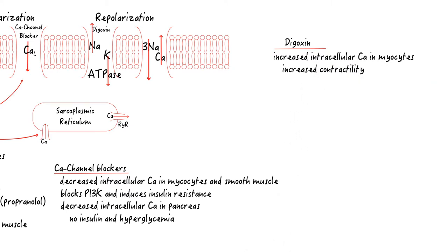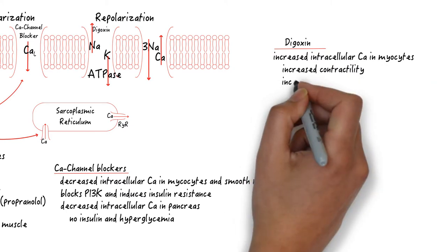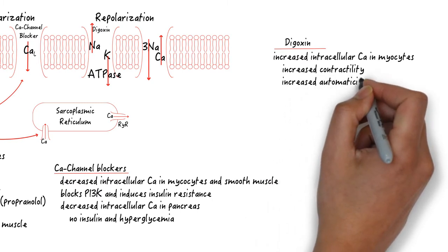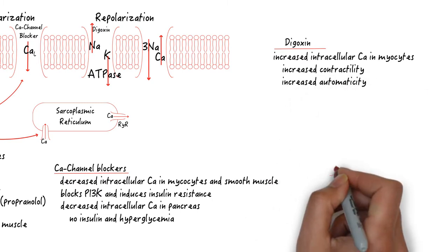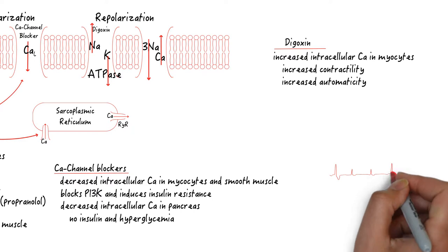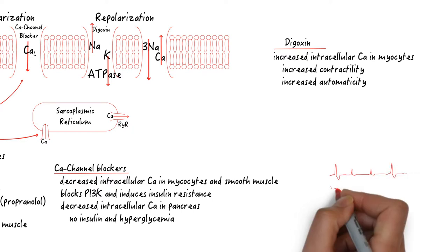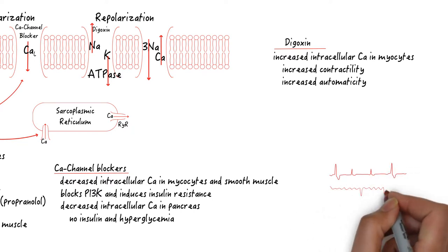This is how digoxin increases contractility in patients with heart failure. The increased calcium also causes increased automaticity in both the atria and ventricles. And you can see a lot of PACs and PVCs. The pacemaker cells in the atria are driven by calcium flux. An increased intracellular calcium here can actually speed up atrial depolarization, unveiling rapid AFib and atrial flutter.